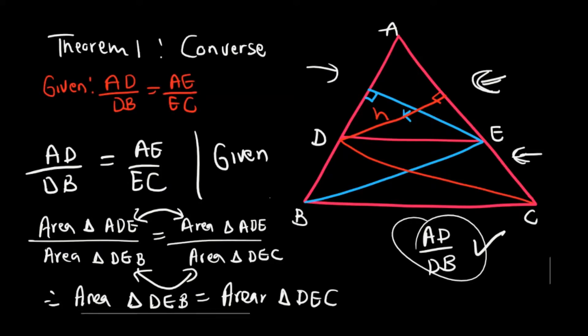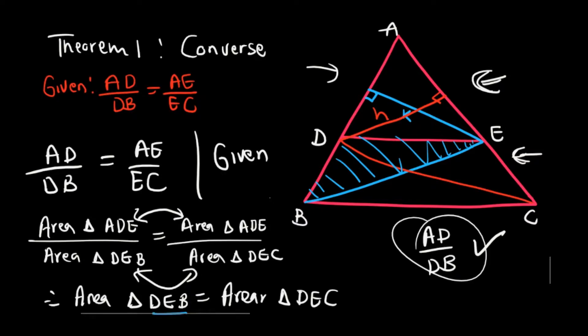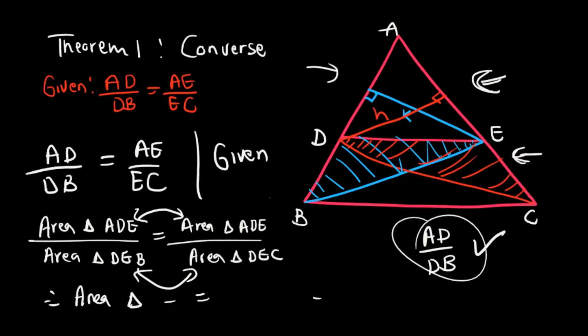To be clear: triangle DEB is this region here, and triangle DEC is this region here. We have now proven that these two areas are equal.